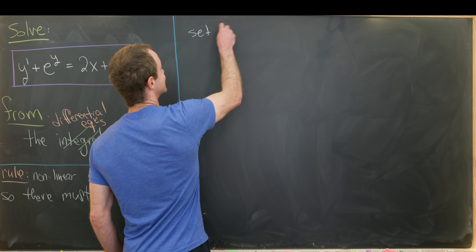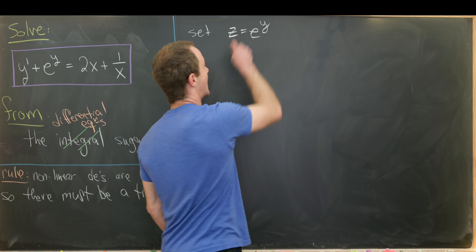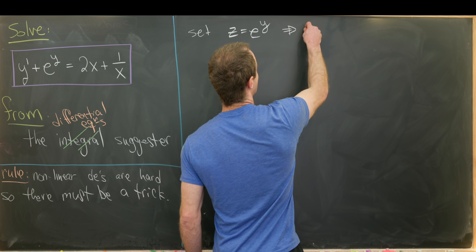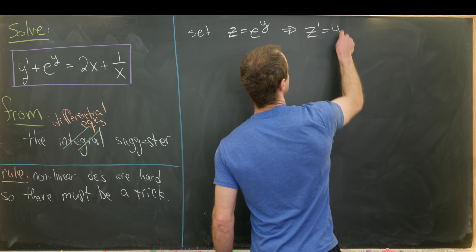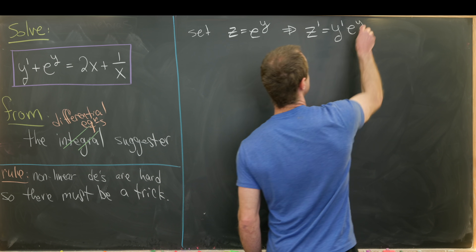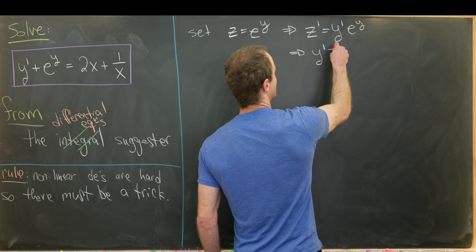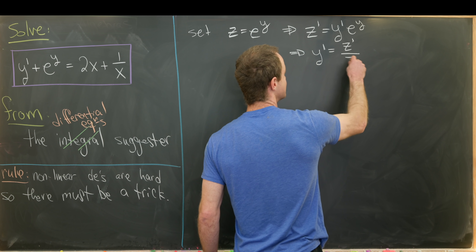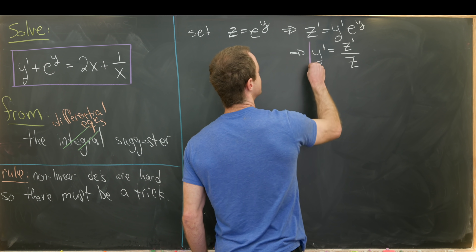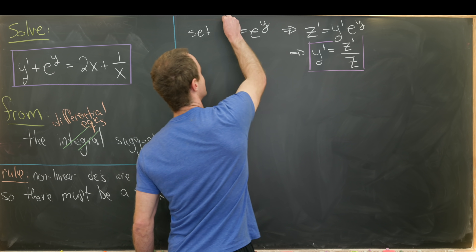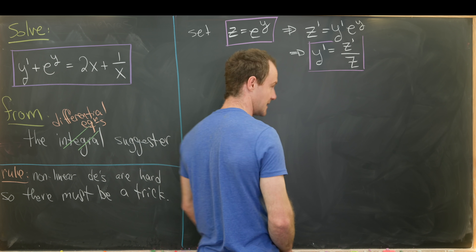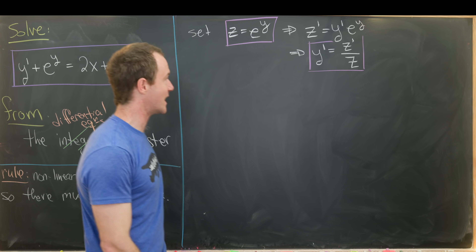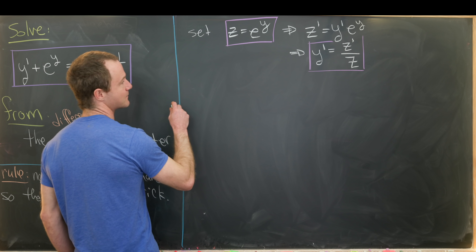Let's set z equal to e to the y and see what that does to our differential equation. By the chain rule, z prime equals y prime times e to the y, which means y prime equals z prime over e to the y. Since e to the y is z, that gives us y prime equals z prime over z. We now have substitutions for both y prime and e to the y, which are the only appearances of y, so we can substitute entirely into the new variable.